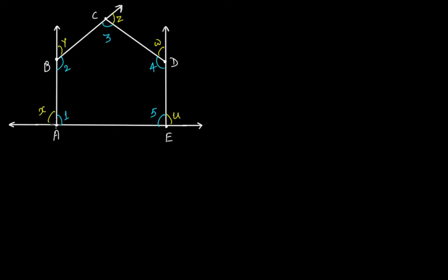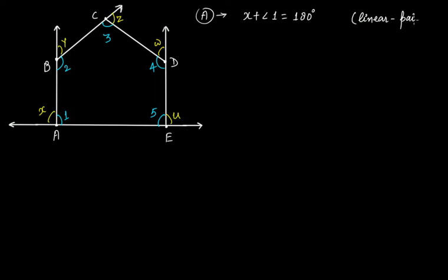From vertex A, X plus angle 1 is equal to 180 degrees. Due to the concept of linear pair, they form a linear pair. Therefore, from here, angle 1 is equal to 180 degrees minus X.